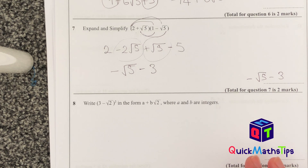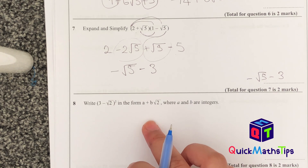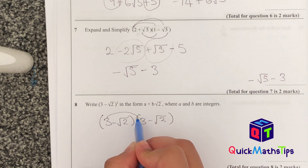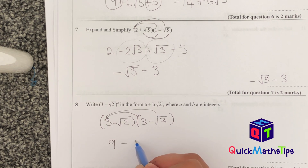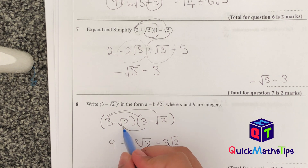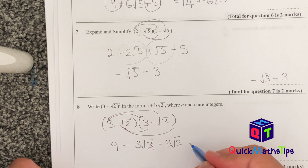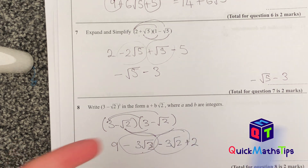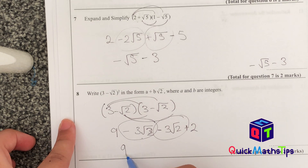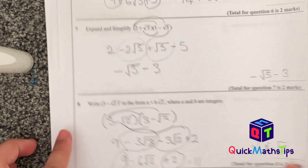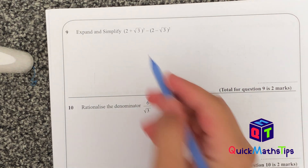Write (3 minus root 2) squared in the form a + b root 2. Expanding (3 − root 2)(3 − root 2): 3×3=9, 3×(−root 2)=−3 root 2, (−root 2)×3=−3 root 2, (−root 2)×(−root 2)=+2. Combining: −3 root 2 − 3 root 2 = −6 root 2, and 9 + 2 = 11. Final answer: 11 − 6 root 2.